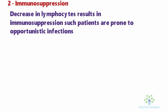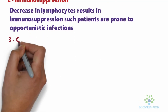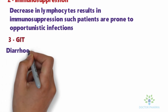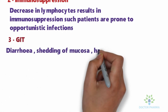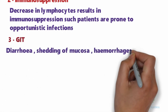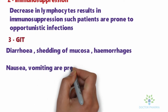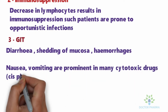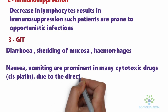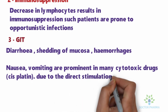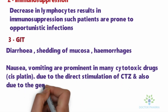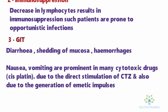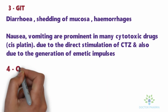The third point is toxicity in the GI tract. Diarrhea, shedding of mucosa, and hemorrhages are common side effects. Nausea and vomiting are prominent with many cytotoxic drugs, mainly cisplatin, due to direct stimulation of the chemoreceptor trigger zone and the generation of emetic impulses.